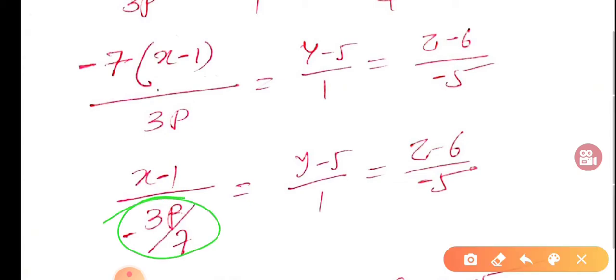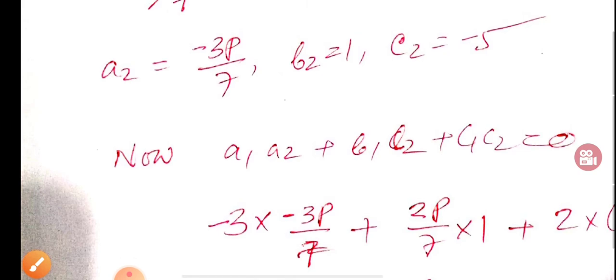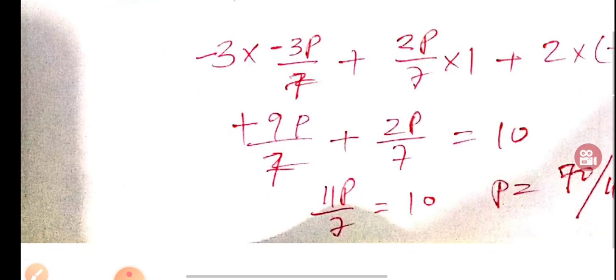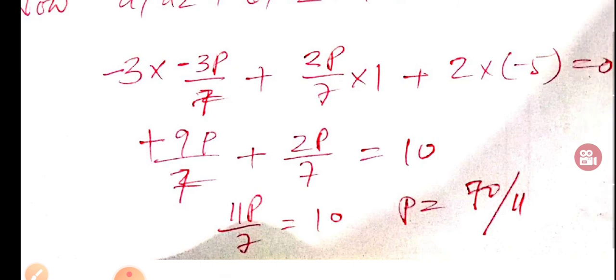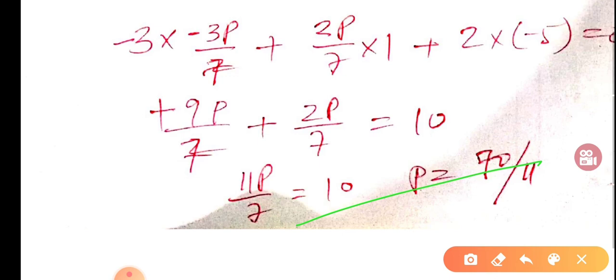So here, a2 is -3p, b2 is 1, c2 is -5. Using the perpendicularity condition, we get (-3) × (-3p)/7 + (2p)/7 × 1 + 2 × (-5) = 0, which gives (9p)/7 + (2p)/7 = 10, so (11p)/7 = 10, therefore p = 70/11.